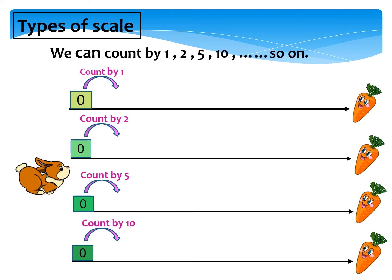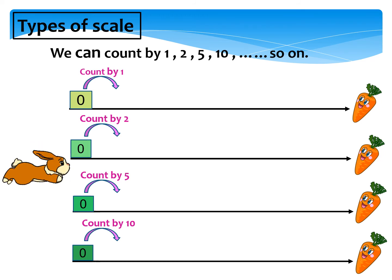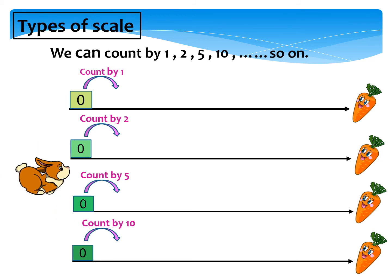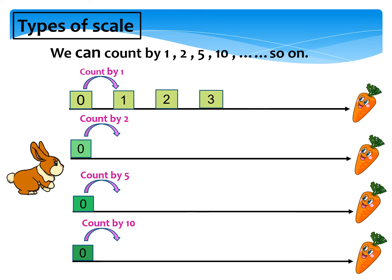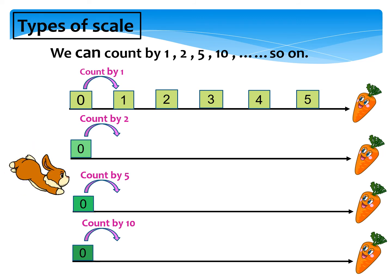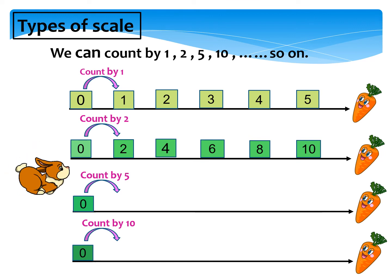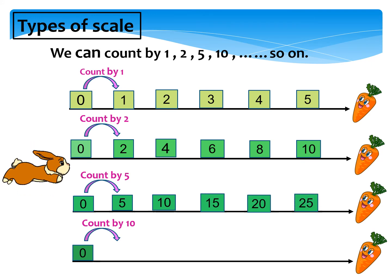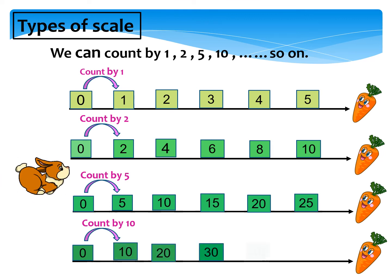The scale of a bar graph can count by one, two, five, ten, and so on. Count by one: 0, 1, 2, 3, 4, 5. Count by two: 0, 2, 4, 6, 8, 10. Count by five: 0, 5, 10, 15, 20, 25. Count by ten: 0, 10, 20, 30, 40, 50.